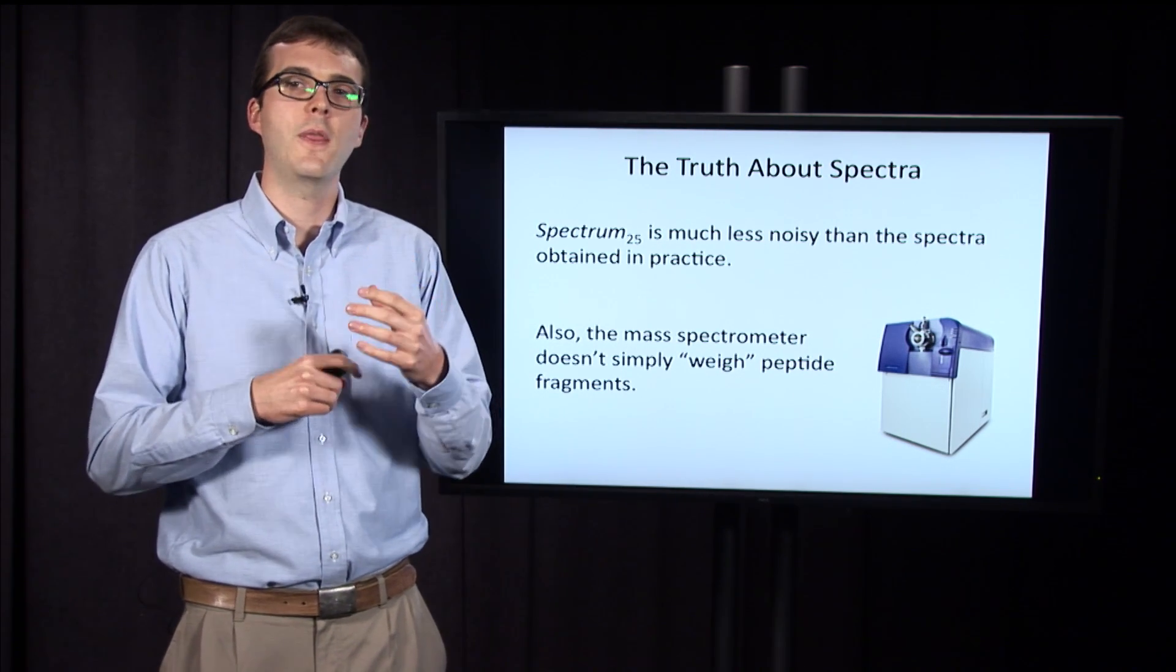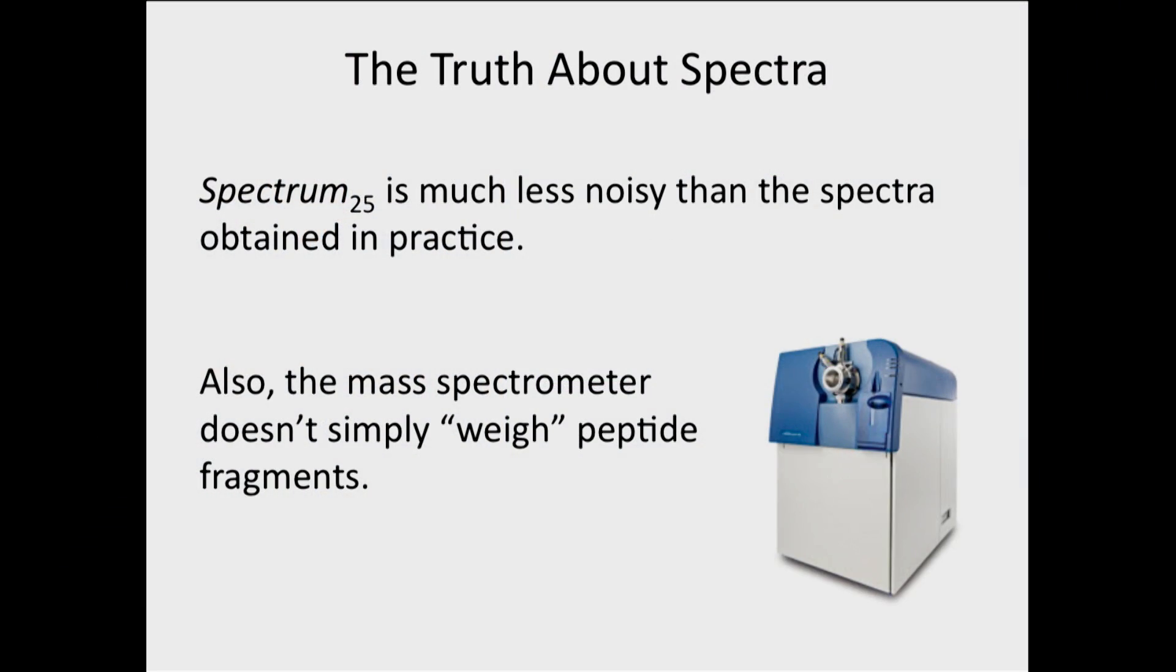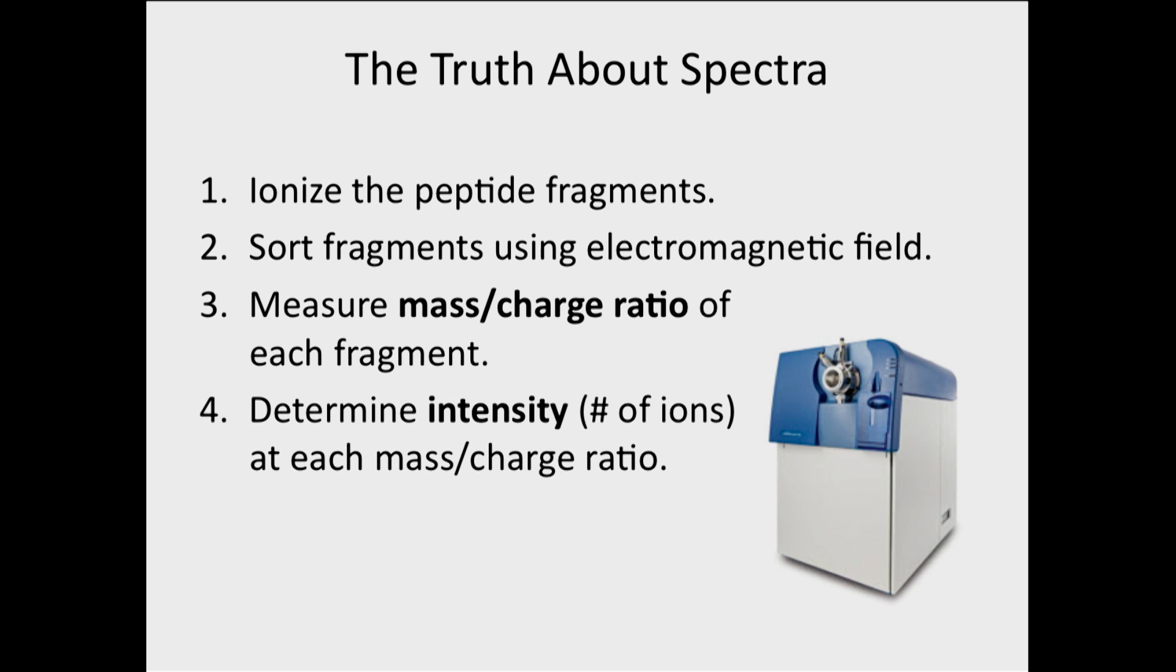Also, I've said that the mass spectrometer is, we can think of it as a scale, but it doesn't really just weigh the peptide fragments. It's a lot more complicated than that. What it does is first it ionizes the peptide fragments, so it converts them into ions with a positive or negative charge, and then it sorts these fragments using an electromagnetic field.